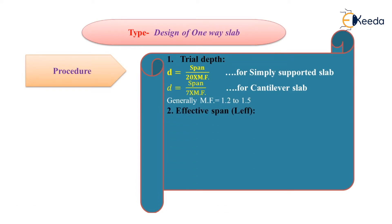Second step is to find out the effective span. In case of slab, the effective span is equal to center to center spacing or clear span plus effective depth, whichever is less.